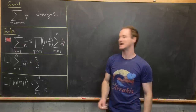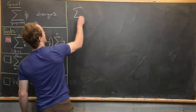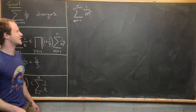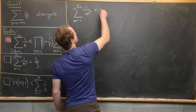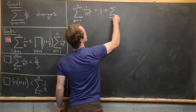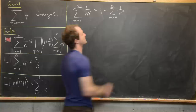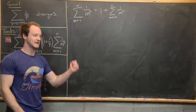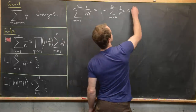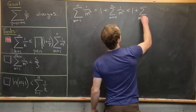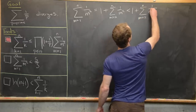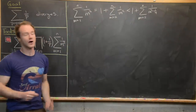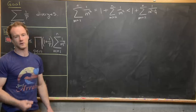For the second inequality, starting with the sum m from 1 to n of 1/m², we take out the first term to get 1 plus the sum m from 2 to n of 1/m². Then we replace the denominator m² with the smaller quantity m² − 1/4, making the fraction larger. So this is less than 1 plus the sum m from 2 to n of 1/(m² − 1/4).